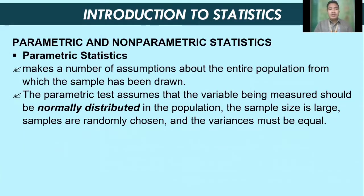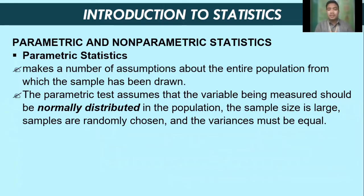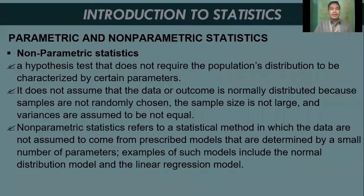Now let's talk about parametric and non-parametric tests. Parametric statistics makes a number of assumptions about the entire population from which the sample has been drawn. The parametric test assumes that the variable being measured should be normally distributed, the sample size is large, samples are randomly chosen, and variances must be equal.